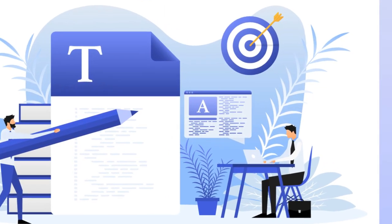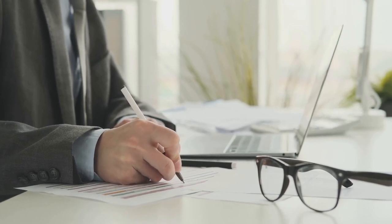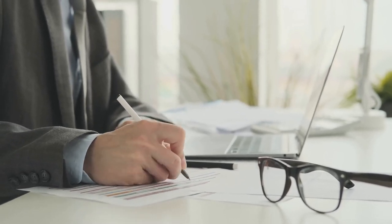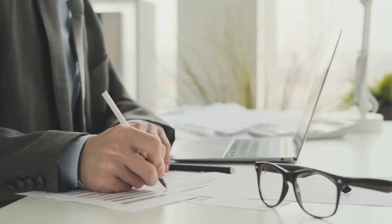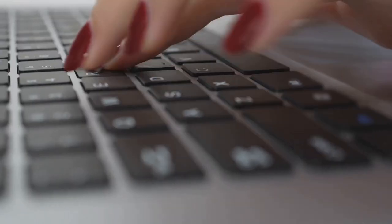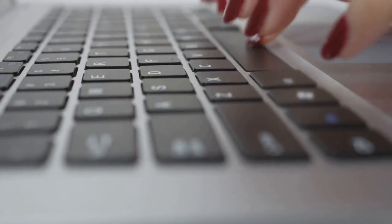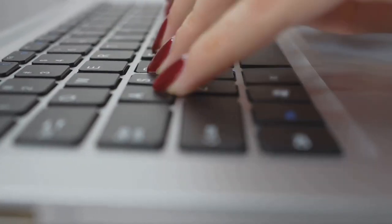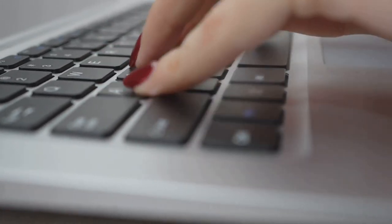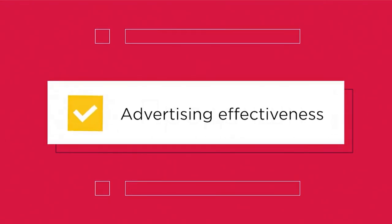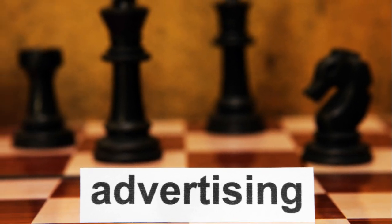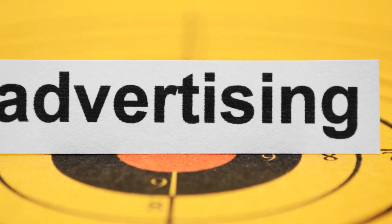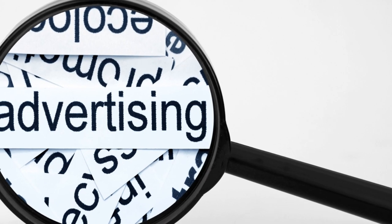In the world of direct response copywriting, nothing is left to chance. Every word, every phrase, every call to action is meticulously crafted to maximize the potential for immediate customer engagement. But even the most seasoned copywriters can't predict with absolute certainty how their content will resonate with their audience. That's where A-B testing — also known as split testing — comes in. It's a method of comparing two versions of an ad or a piece of content to see which performs better, like conducting a mini experiment right in the middle of your marketing campaign.